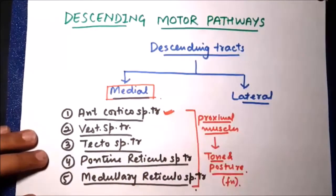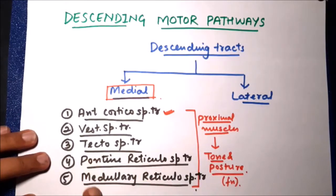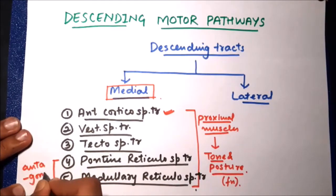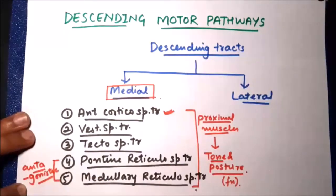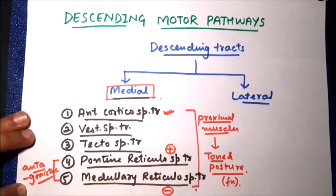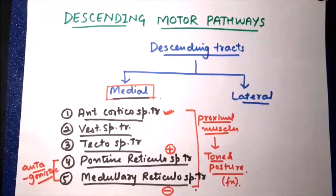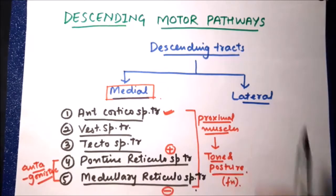The anterior corticospinal tract is the most important among these tracts and will be discussed along with the lateral corticospinal tract when we discuss the pyramidal tract. The pontine reticulospinal tract and medullary reticulospinal tract are antagonistic in function — the pontine reticulospinal tract is stimulatory or excitatory whereas the medullary reticulospinal tract is inhibitory, stimulating anti-gravity muscles.